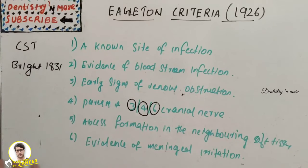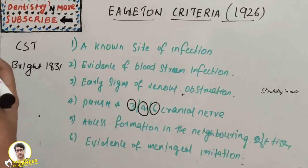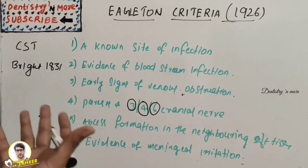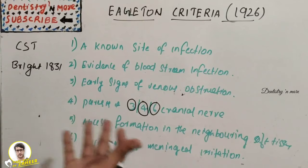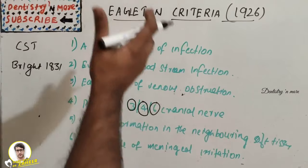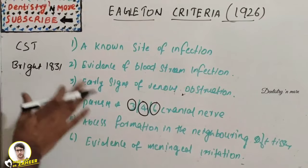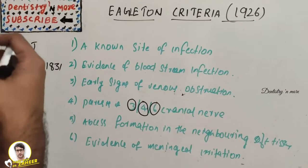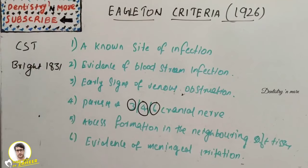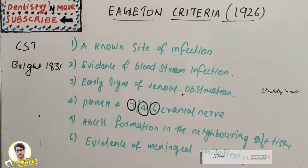Unethical practices by unregistered practitioners and a lack of awareness of dental health in rural areas can lead to severe life-threatening complications of a dental infection, because dental infection has a high chance of turning into cavernous sinus thrombosis. All practitioners must know this Eagleton criteria to manage CST as early as possible. Early diagnosis is the most important thing in management of CST — as time goes by, recovery rate is reduced and mortality rate increases. Early diagnosis and aggressive antibiotic treatment can definitely prevent mortality.